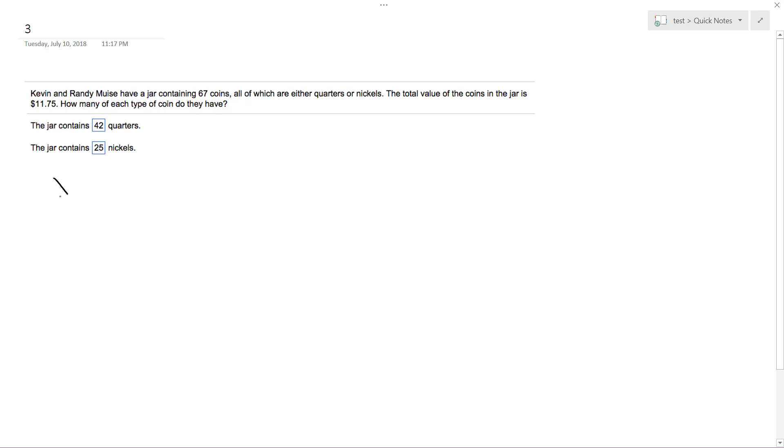This is going to be two equations, two unknowns. I'll set it up with quarters as Q and nickels as N. So the total together, we have 67 coins, and then we have 0.25 times the number of Q plus the nickels.